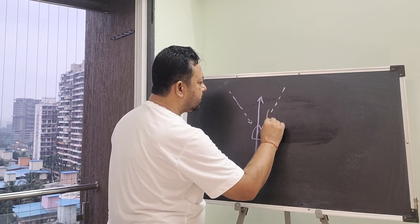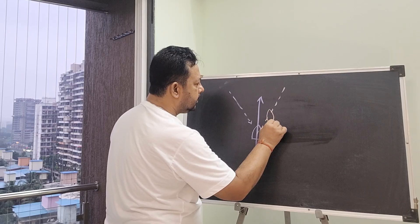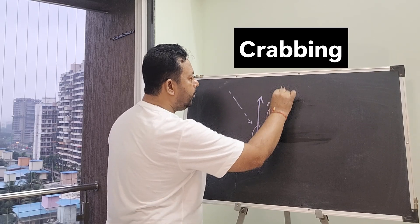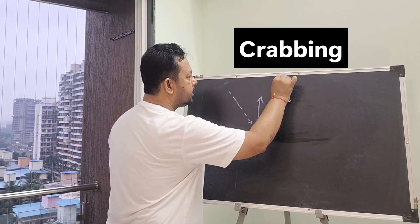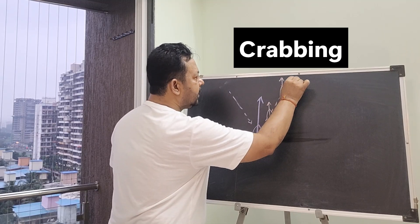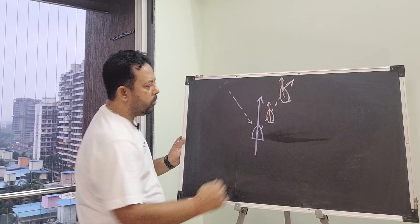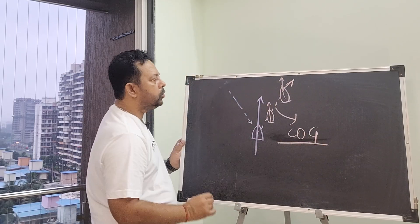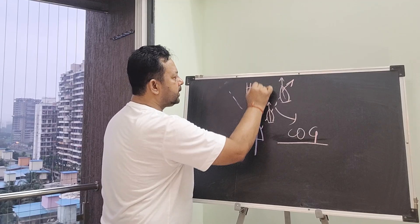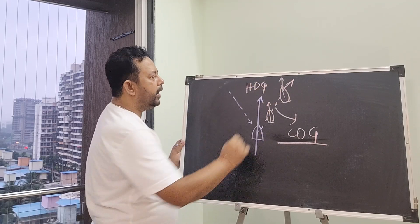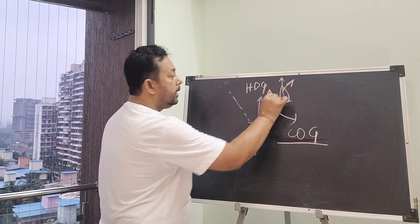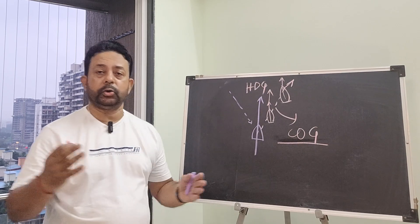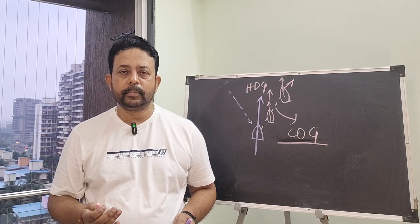The vessel will head one way but it will be moving in a different direction. So the vessel's course over ground — COG — is this actual direction of movement, while the vessel's heading is what the gyro compass is showing. These two are different.